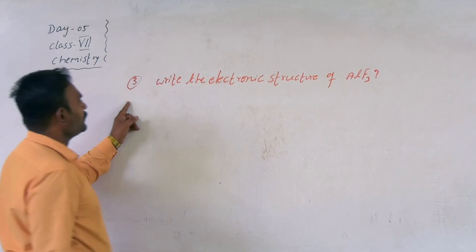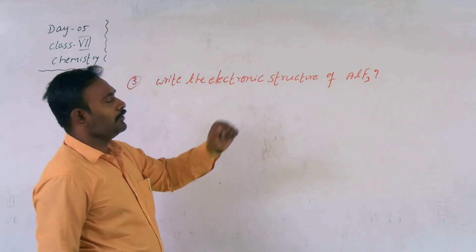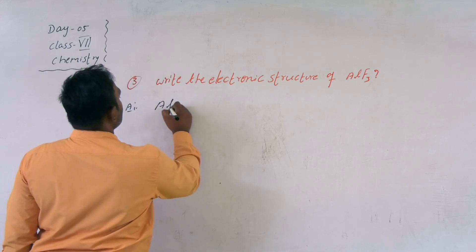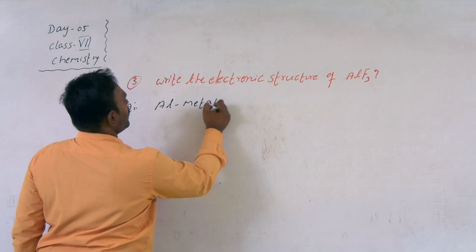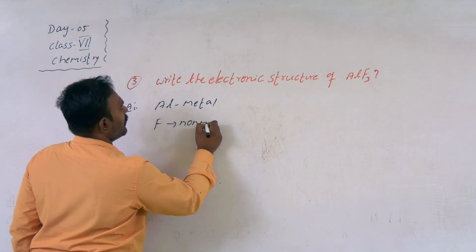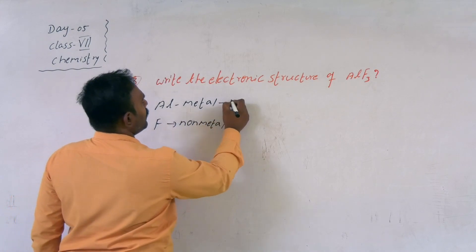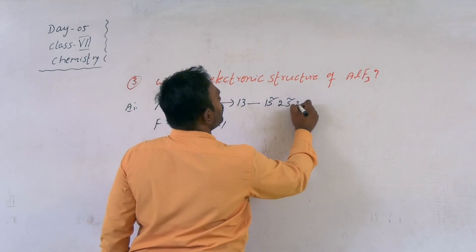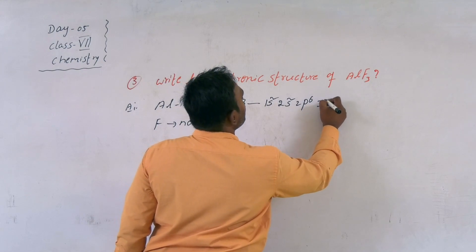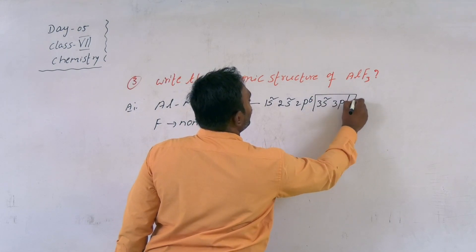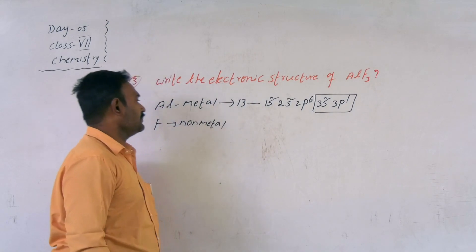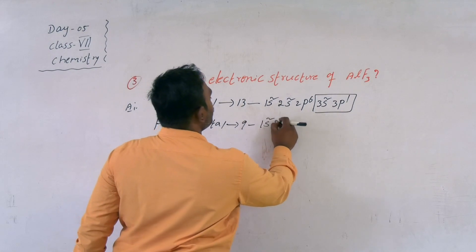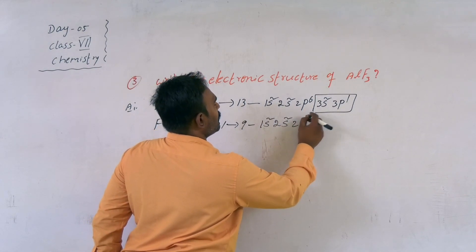The third question is: write the electronic structure of aluminium fluoride. This is also an ionic bond — aluminium is the metal and fluorine is the non-metal. Atomic number of aluminium is 13. Configuration: 1s2, 2s2, 2p6, 3s2, 3p1, so 3 electrons are in the outermost shell.